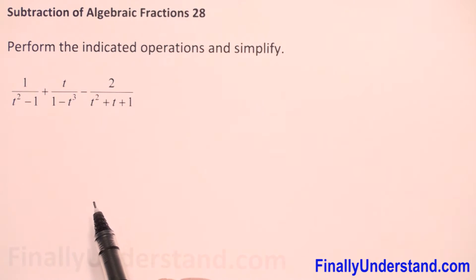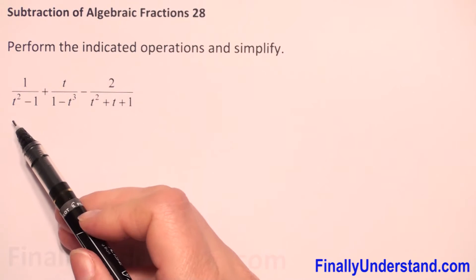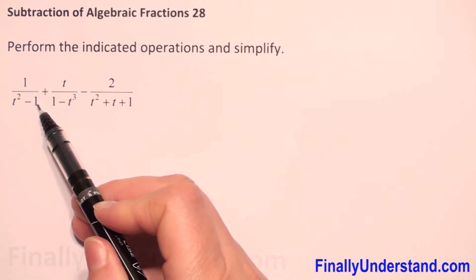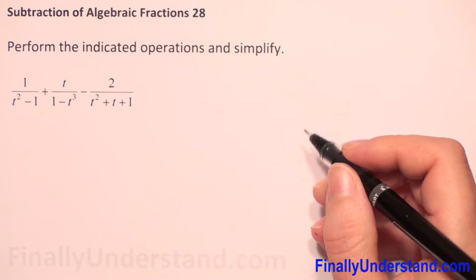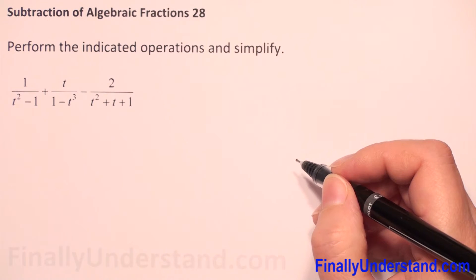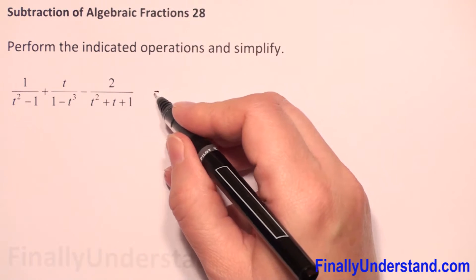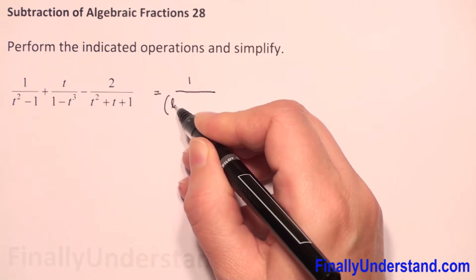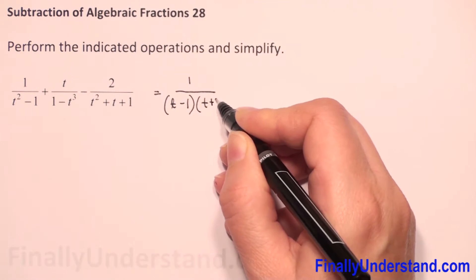First, let's check what we have. In the first denominator we have t squared minus one. So we can use the difference of two perfect squares formula and we can rewrite that as one over t minus one times t plus one.